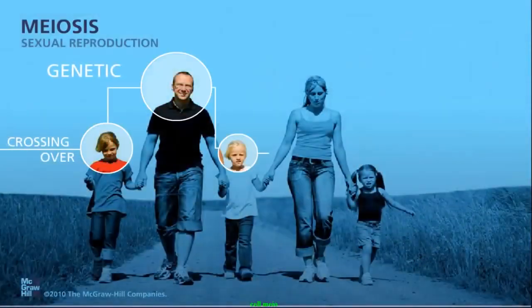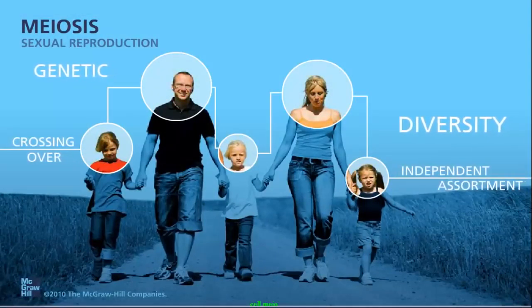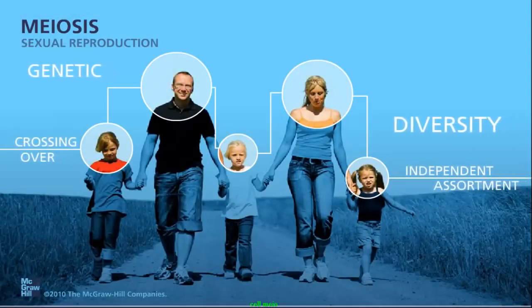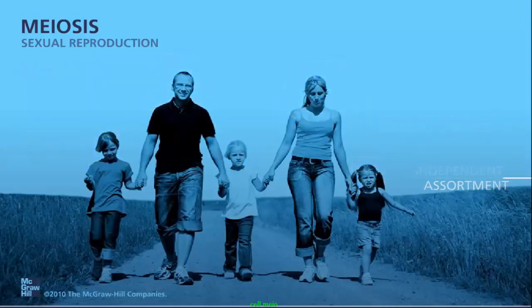The combination of independent assortment, crossing over, and the random pairing of gametes during sexual reproduction increases genetic diversity, and explains why a child will not look exactly like his or her parents or siblings.